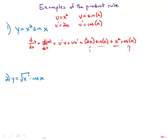Apply this again in number 2. So here u equals square root of x, v equals cosine x.